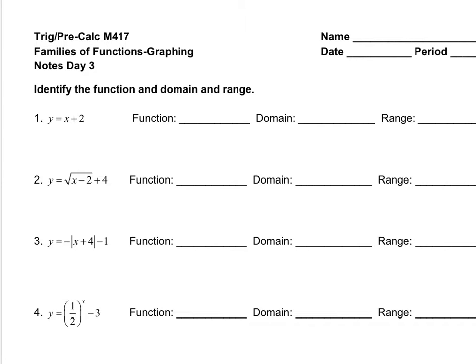If you take a look at number one, this is going to be a linear function — that's x to the first, which means it's linear. And unless it's a special case where it's a vertical or horizontal line, then the domain and range are always going to be negative to positive infinity. We are going to have some restrictions on domain and range as we go throughout the examples, depending on what type of function it is.